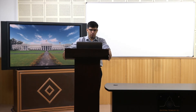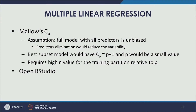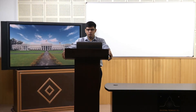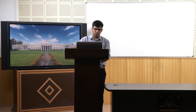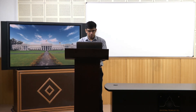Another important point related to Mallow's CP is that it requires a high N value — more observations in the training partition relative to P. Depending on the number of variables, since we consider all possible combinations, we require more observations in the training partitions. Now let's open R Studio and understand these concepts through an exercise.